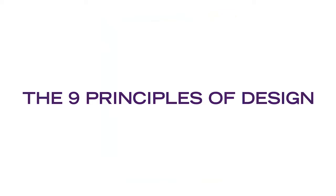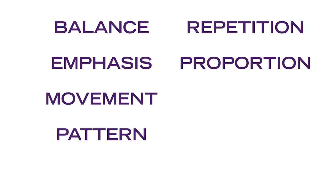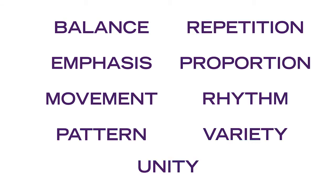There are nine principles of design in visual art: balance, emphasis, movement, pattern, repetition, proportion, rhythm, variety, and unity. They describe the ways that artists use the elements of art in a work of art.